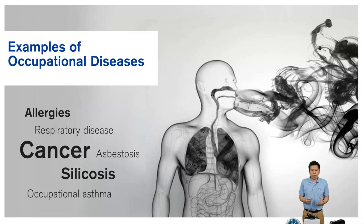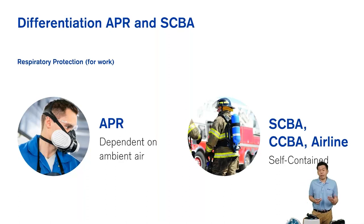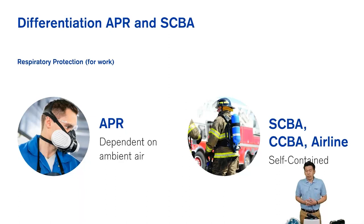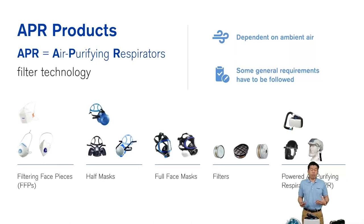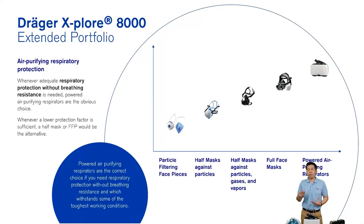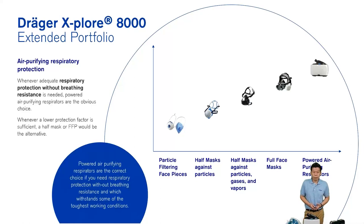To protect against dangerous particles, gases and vapors — we call these contaminants — we use APR, air purifying respirators. Depending on the ambient air, these are filtering products that filter away harmful contaminants. If working in an environment with much higher contaminants, we need to use air supply products like SCBA, CCBA, and airline. From Draeger, our APR products range from disposable dust masks and filtering facepieces all the way to full APR. The more hazardous the environment, the more we will recommend PAPR — which is why we are talking about PAPR today.